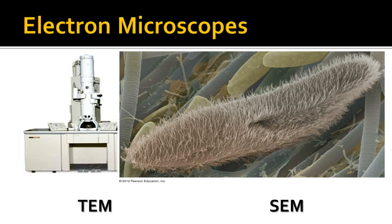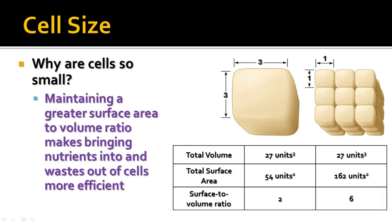A big question we often ask about cells is why are cells so small? As organisms grow, cells do get somewhat bigger, but there's a limit to how large cells can grow. It's really important for the organism to maintain a larger surface area to volume ratio. A bigger surface area to volume ratio means you can bring things into the cell or send waste out much more efficiently than if the cell is bigger.